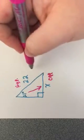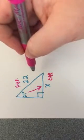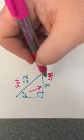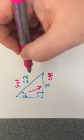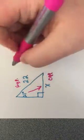When we look back at our trig ratios, we see that sine deals with opposite over hypotenuse. So we're going to use sine to find our missing side length.